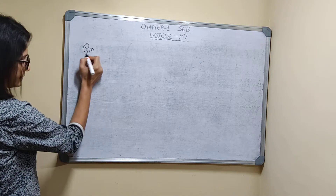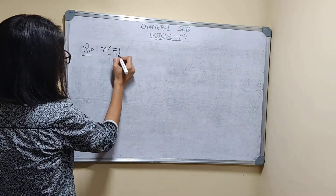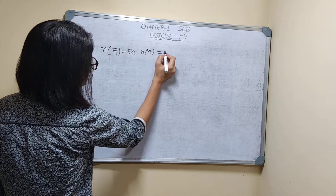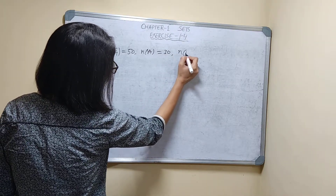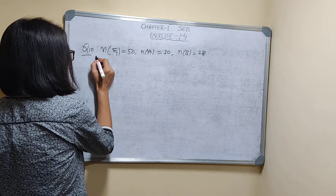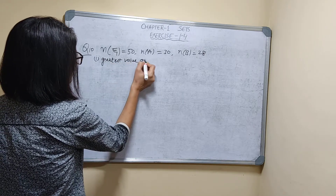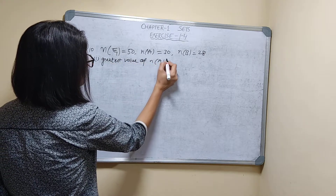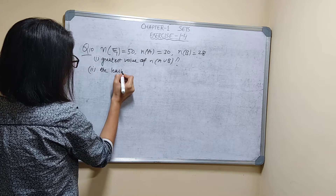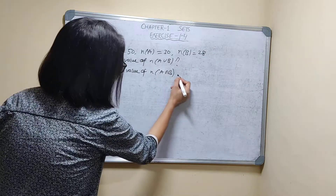Question number 10. If the number of elements in the universal set is equal to 50, the number of elements in A is equal to 30, and the number of elements in B is equal to 28. Find the greatest value of N(A∪B), and the second part is find the least value of N(A∩B).